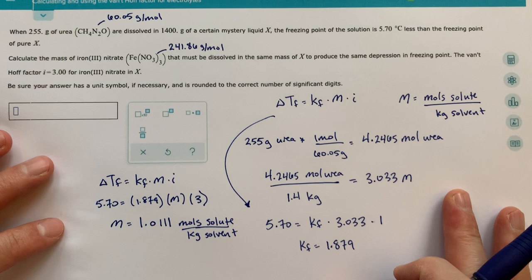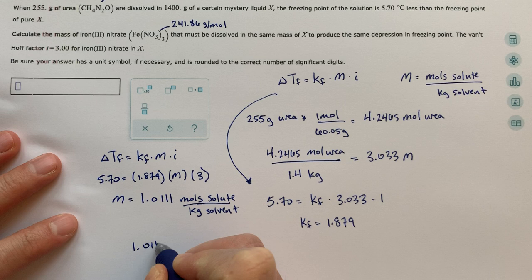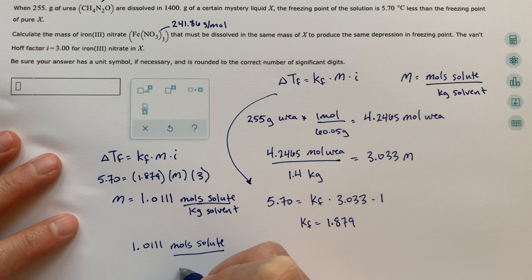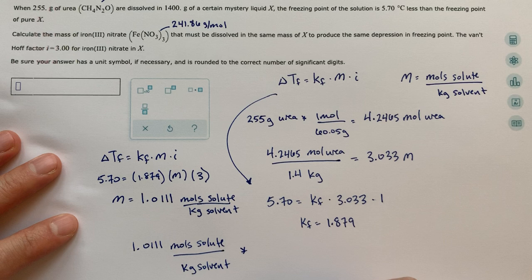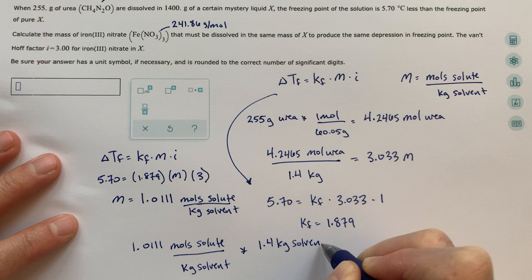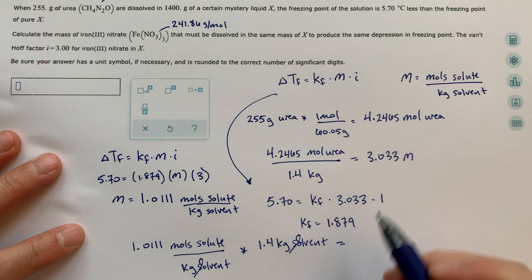So if I know that this is the molality, 1.0111 moles of solute for every one kilogram of solvent, and instead of having one kilogram of solvent, I have 1.4 kilograms of solvent. We should be able to see that we can cancel out those units of kilograms of solvent.